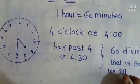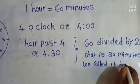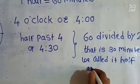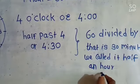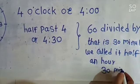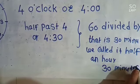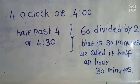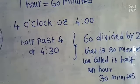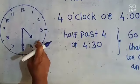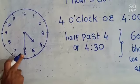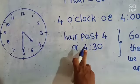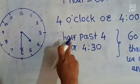We call it half an hour, and that is 30 minutes. We have to write this important thing in the notebook: 30 minutes means half past. So when the hour hand is between 4 and 5 and the minute hand is on 6, then the time is 4:30 or half past 4.